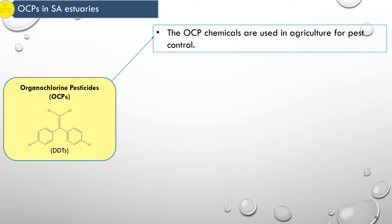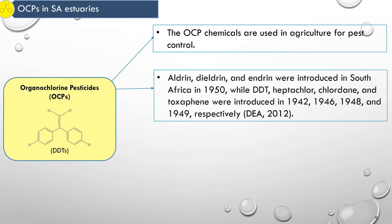Organochlorine Pesticides in South African Estuaries. An example of an OCP group of chemicals is DDT, which is Dichloro-Diphenyl-Trichloroethane. This is a colorless, odorless and tasteless insecticide. The OCP chemicals are used in agriculture for pest control.